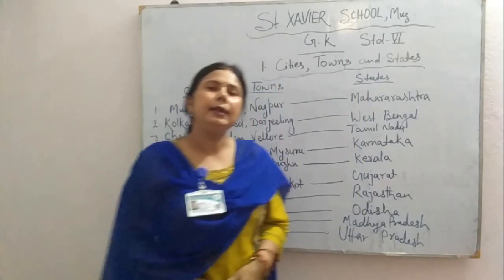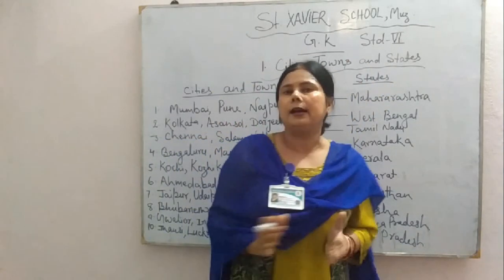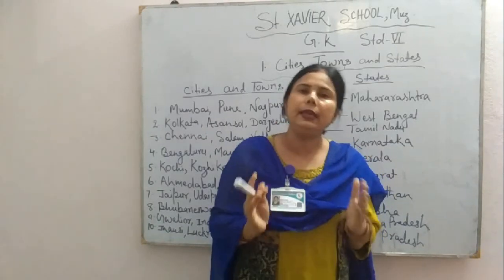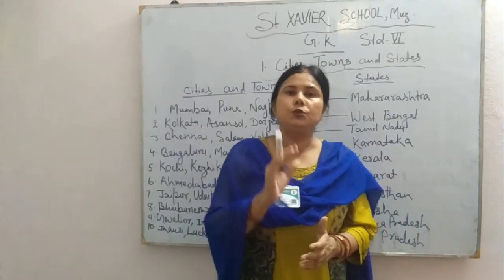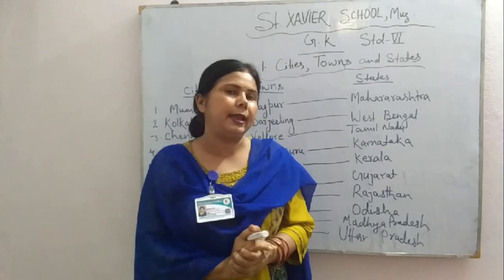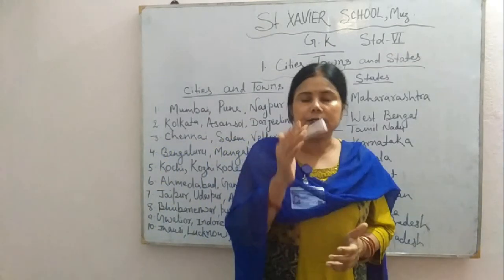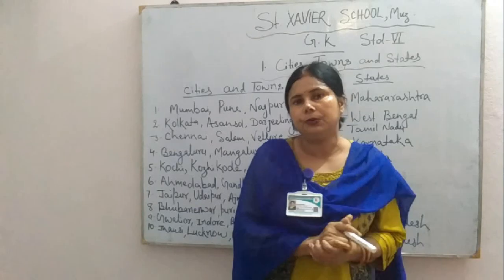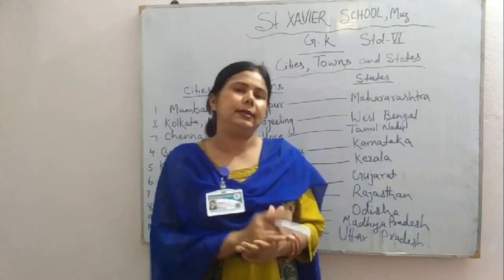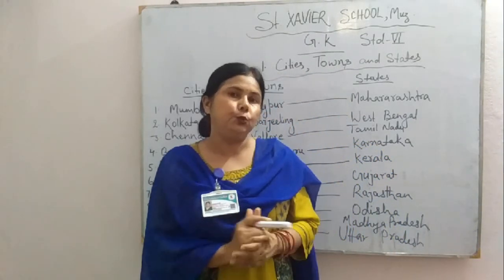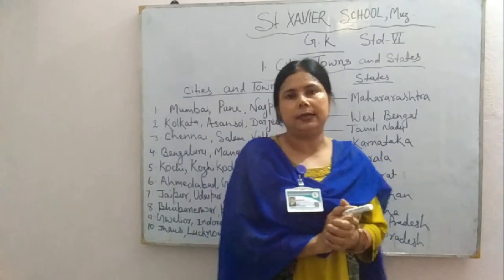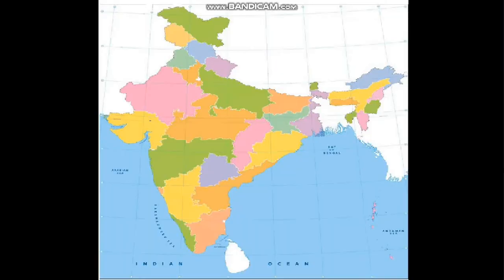Children, India is a very large country. It is very vast. It has 28 states and numerous Union territories. Each state is further divided into many towns and cities. You can see all these states and cities on a map. Here goes the map and you can find out different states and cities in it.